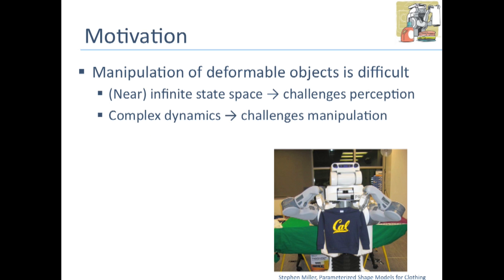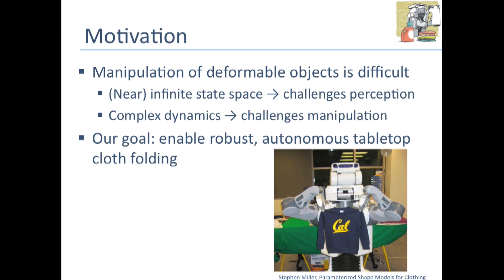The generic task of manipulating a deformable object is a very difficult one. The near-infinite state space the cloth can have makes it very hard to perceive the state it's in, and then complex dynamics make it difficult to manipulate. So our goal in this work is to look at just a small subspace of the problem where we try to fold on a two-dimensional table. Our goal is to enable robust autonomous robotic cloth folding.